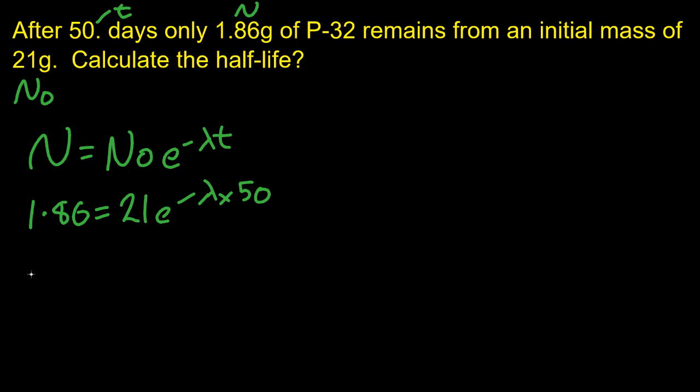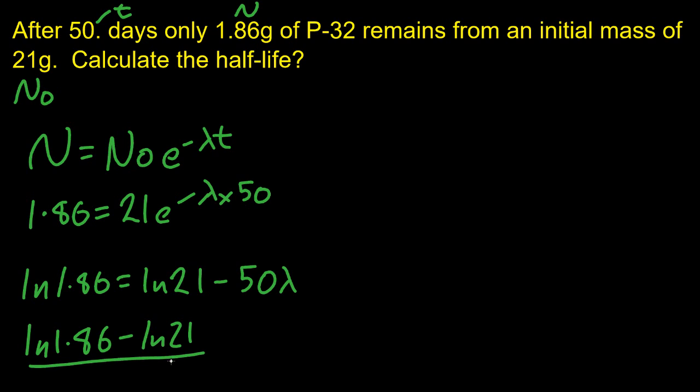Okay, so my decay constant is caught up in that exponential. So take natural logs again of both sides, and then rearrange for the decay constant. And that gives me a value of lambda equals 0.0485. I'm using one more sig fig than I need to, and round off at the end.